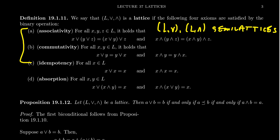So given any two elements x and y inside the lattice, we require that the join of x and (x meet y) is equal to x, and we require that the meet of x and (x join y) is also equal to x. Notice that when you toggle these things: x join (x meet y) equals x, and similarly x meet (x join y) equals x. You do have to be careful with parentheses here, as we don't have an order of operations like we do in a ring with the distributive law.